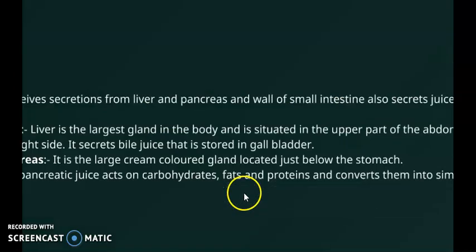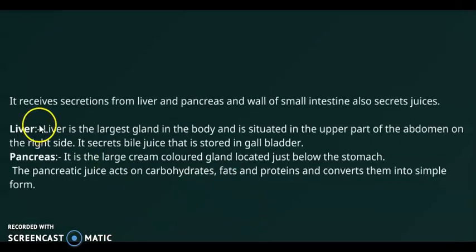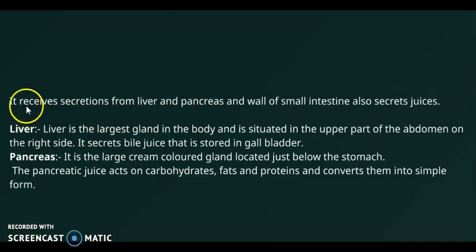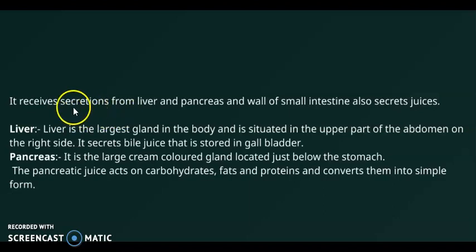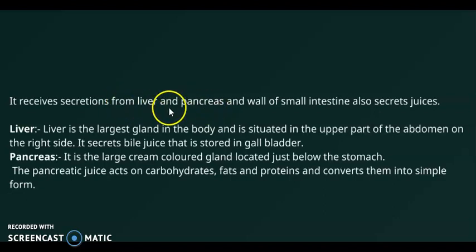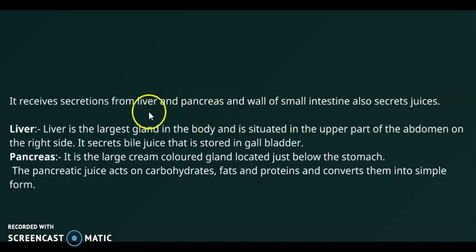The small intestine has a connection with the liver and pancreas. The first part of the small intestine is the duodenum, and it receives the secretion or juice from the liver and pancreas. Pancreas and liver are glands we already learned about in the first module, and they secrete their juices into the first part of the small intestine.